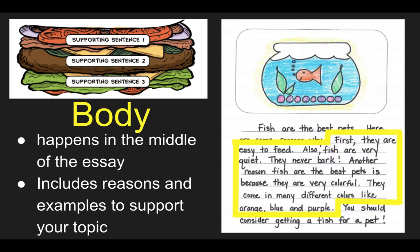Look at our example about fish being the best pet. The reasons are in yellow. First, they are easy to feed. Also, fish are very quiet — they never bark. Another reason fish are the best pets is because they are very colorful. They come in many different colors like orange, blue, and purple. So those are some reasons why they believe fish are the best pet.